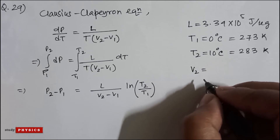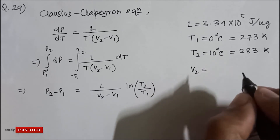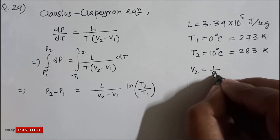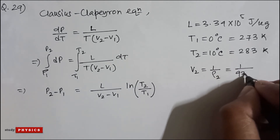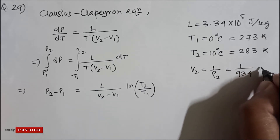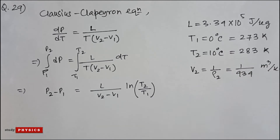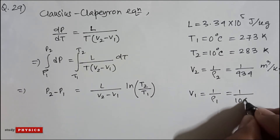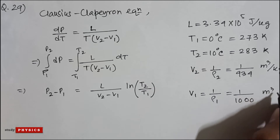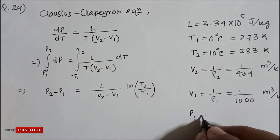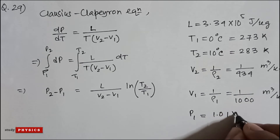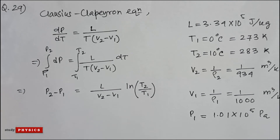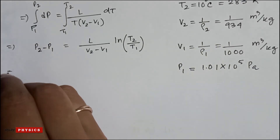They have given the density, so V2 is for ice: 1 divided by rho2, which is 1 divided by 934 kg per meter cube, giving meter cube per kg. And P1 is 1.01 into 10 to the power 5 Pascal.